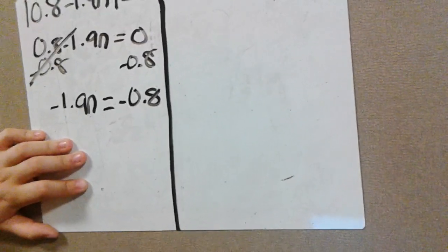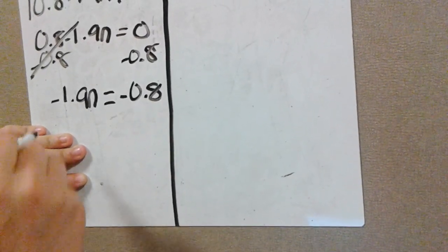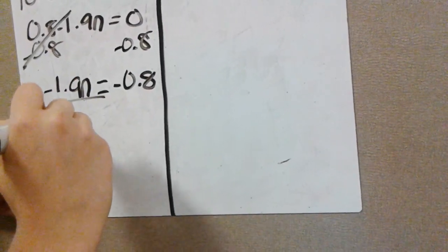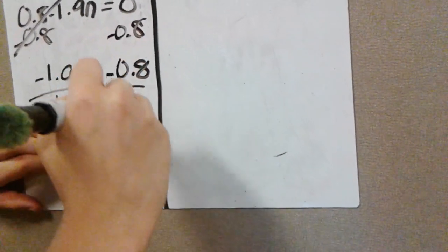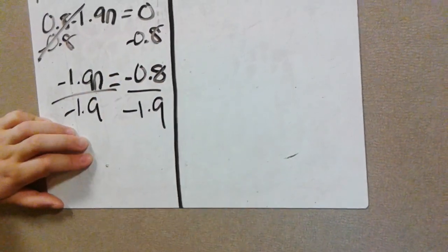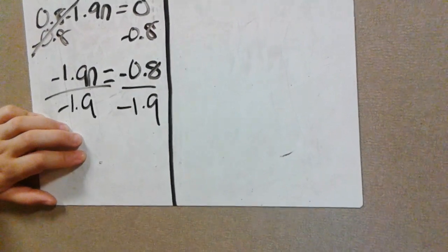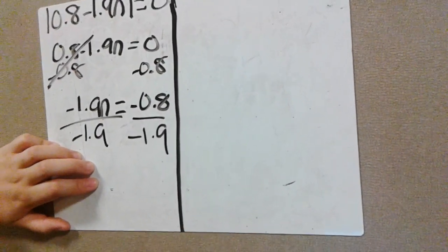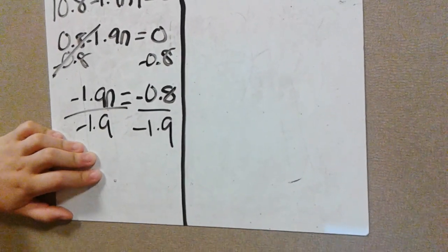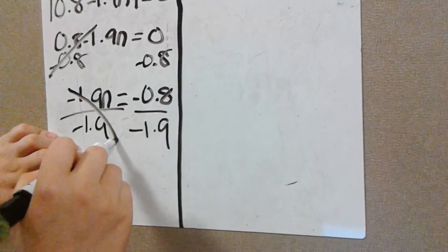So we divide negative 1.9 on both sides. And negative 1.9n over negative 1.9 cancels out, leaving n.